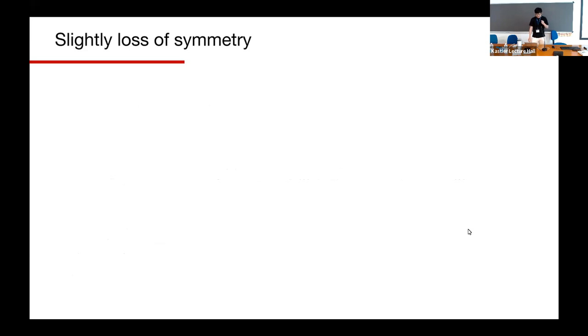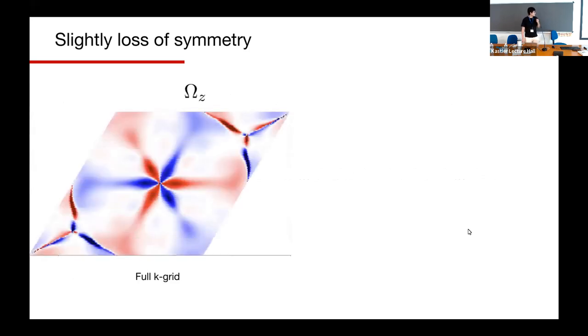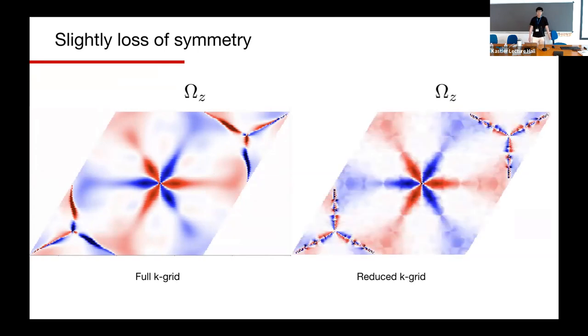An easy way to reduce the calculation time is only to calculate the symmetry-reduced k-grid. But usually if we use Wannier interpolation, the Wannier functions slightly break the symmetry a little bit like this one. Here is a plot of Berry curvature, the z-component of one band from trigonal tellurium. The tellurium has C3 rotation. We can see it roughly has the C3 rotation, but for the details not. It's clear here. It breaks a little bit C3 rotation in the details around here as well. If we only calculate the reduced k-grid, it's like this.